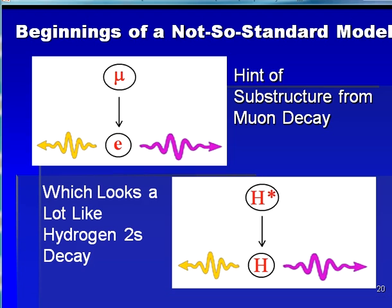With our historical overview now complete, we can now turn to the development of a simpler model of what the world is made of. The first observation I had as a graduate student in the early 1980s was to see that the decay of a muon was extremely similar to the decay of a hydrogen atom from an excited state to its ground state. Here we see pictures of those two events. In the first drawing, we can see a muon decay — the muon decays into an electron plus two neutrinos. The neutrinos are either massless or nearly so.